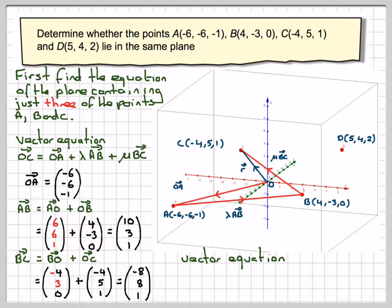The vector equation R will be equal to OA: (-6, -6, -1) plus lambda (10, 3, 1) plus mu (-8, 8, 1).